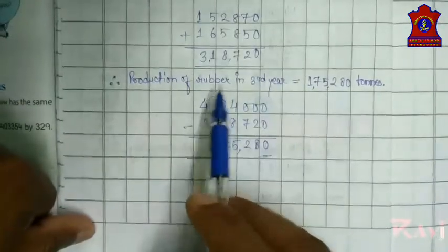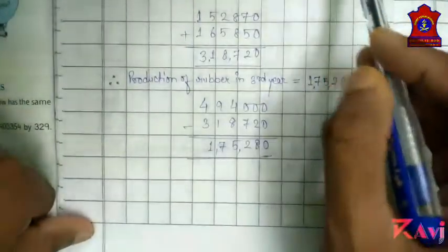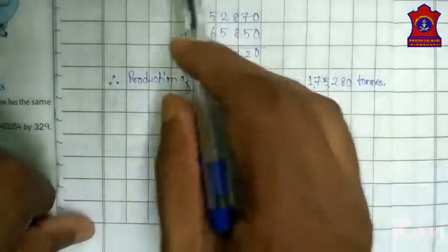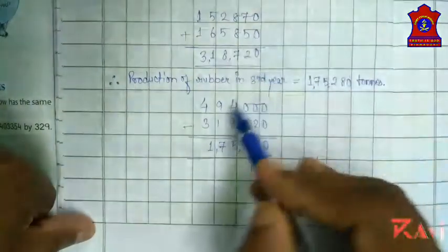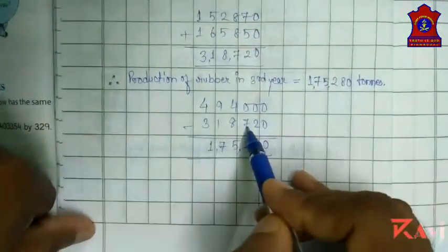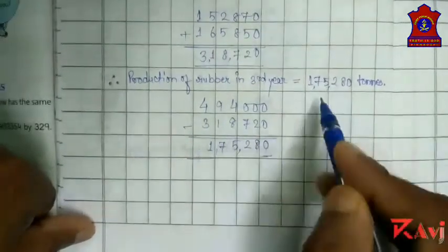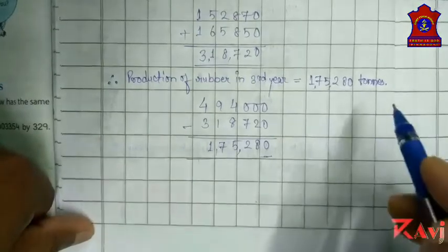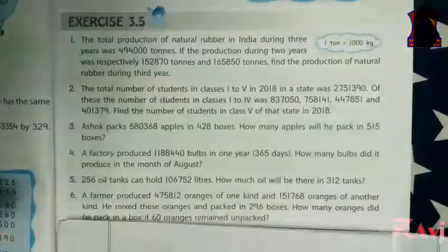To find the production of rubber in the third year, we subtract the total production of two years from the total production of rubber in India. So four lakh ninety-four thousand minus three lakh eighteen thousand seven hundred twenty gives us one lakh seventy-five thousand two hundred eighty tons. Now look at question number two.